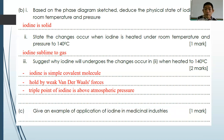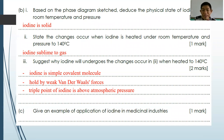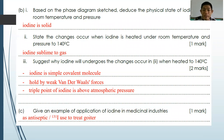Give an example of the application of iodine in the medicinal industry. Iodine can act as an antiseptic, or the isotope iodine-131 is used to treat thyroid cancer. Either answer is acceptable as long as it relates to a medicinal industry application.